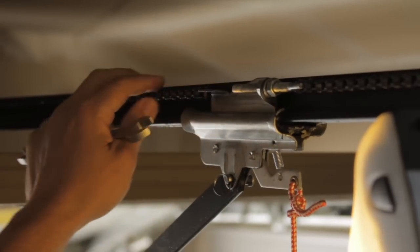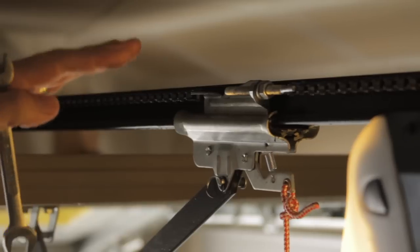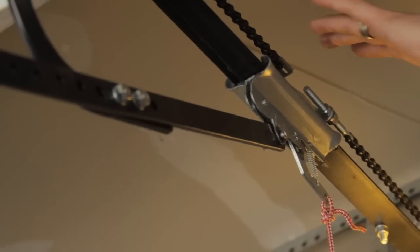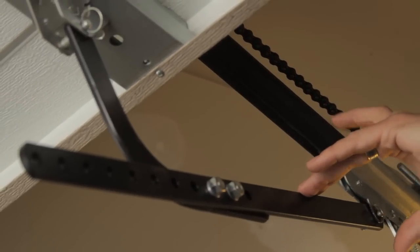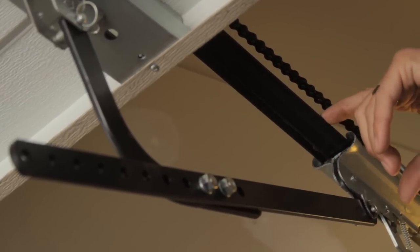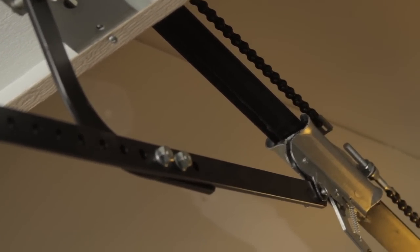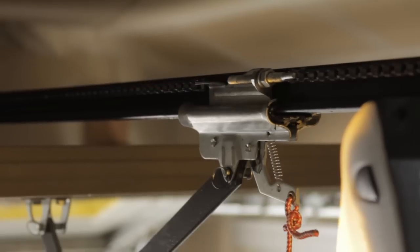Then what you're looking for is you want the chain sagging just enough to be slightly above the bottom of this rail. So right in this range at the middle of the chain sag.